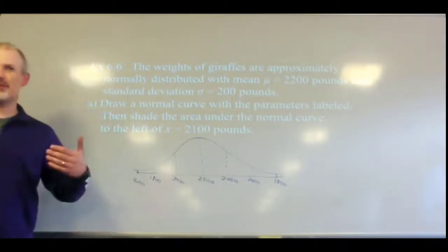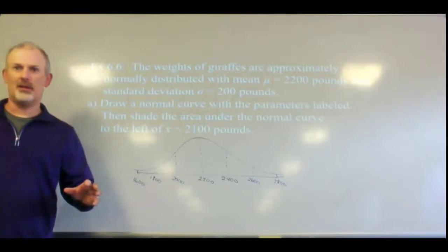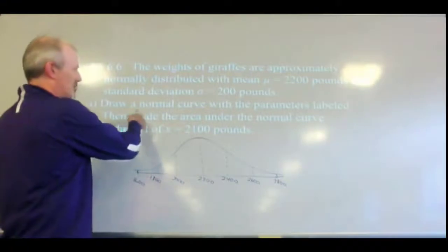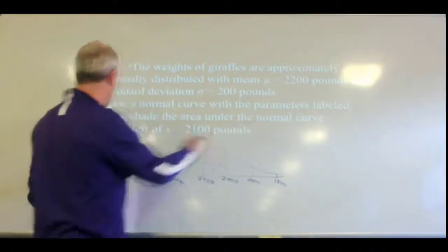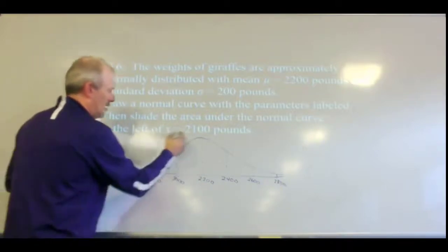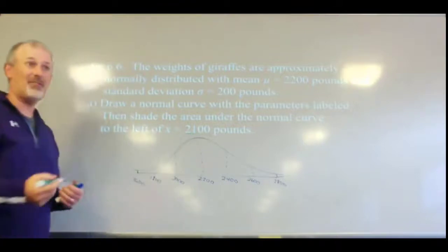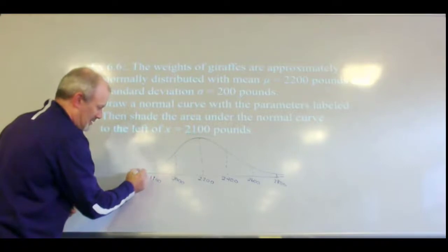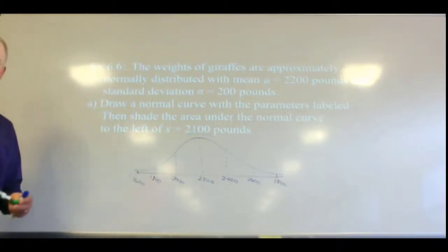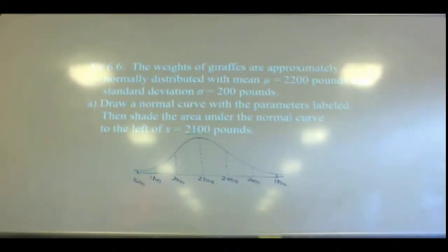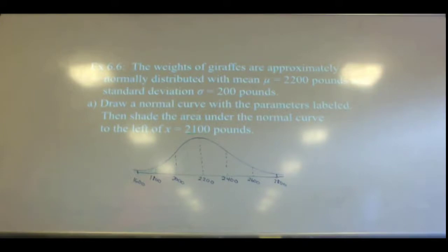The curve doesn't end there, but by that time it's so small that there's hardly anything outside those areas. We're supposed to shade the area to the left of 2,100. Where is 2,100? Halfway between 2,000 and 2,200 — right here. Then everything to the left of that is shaded. That's the answer for part A. The pictures all look the same because they're all normal curves — the only difference is how we label the means and standard deviations.